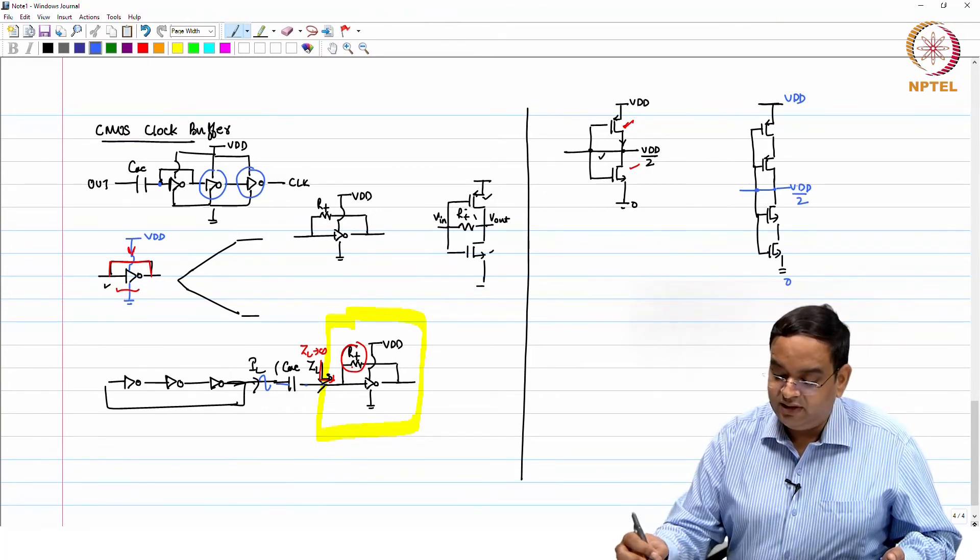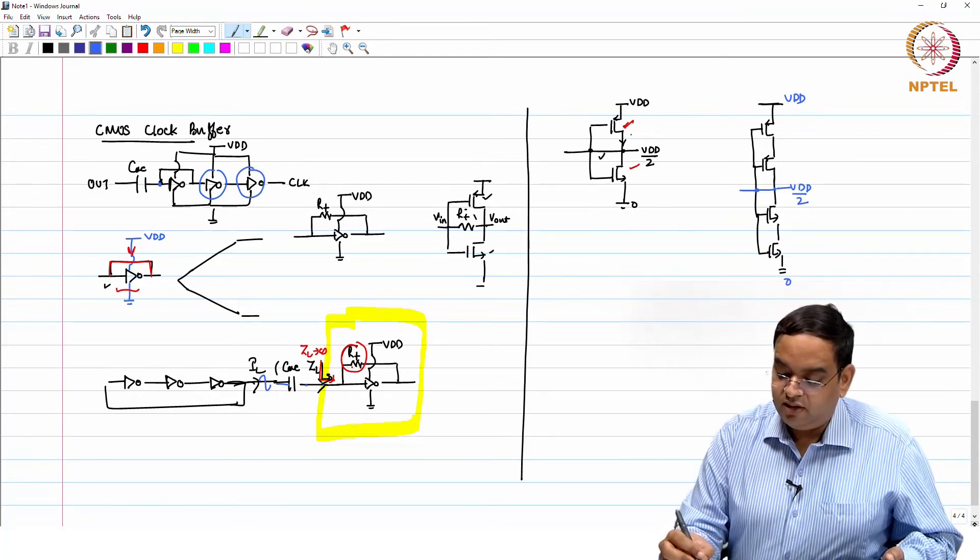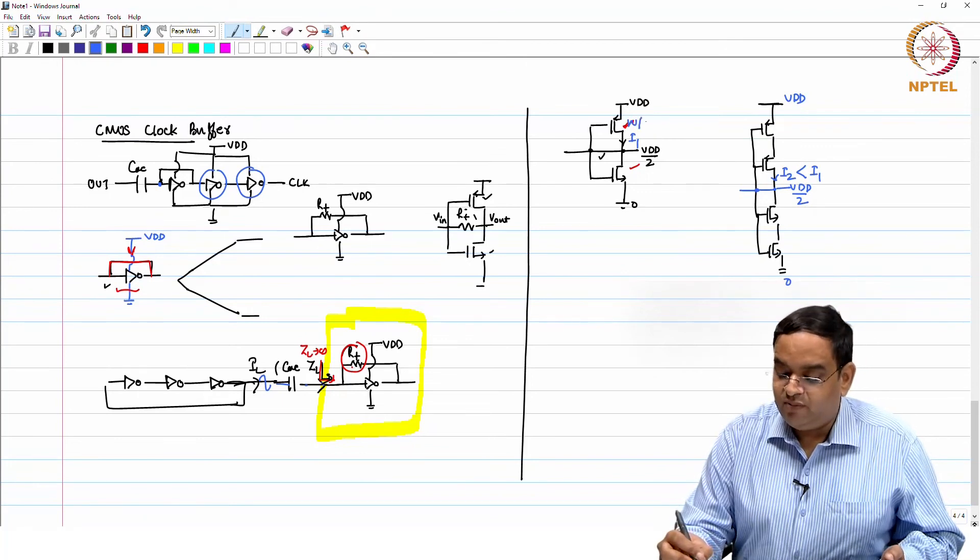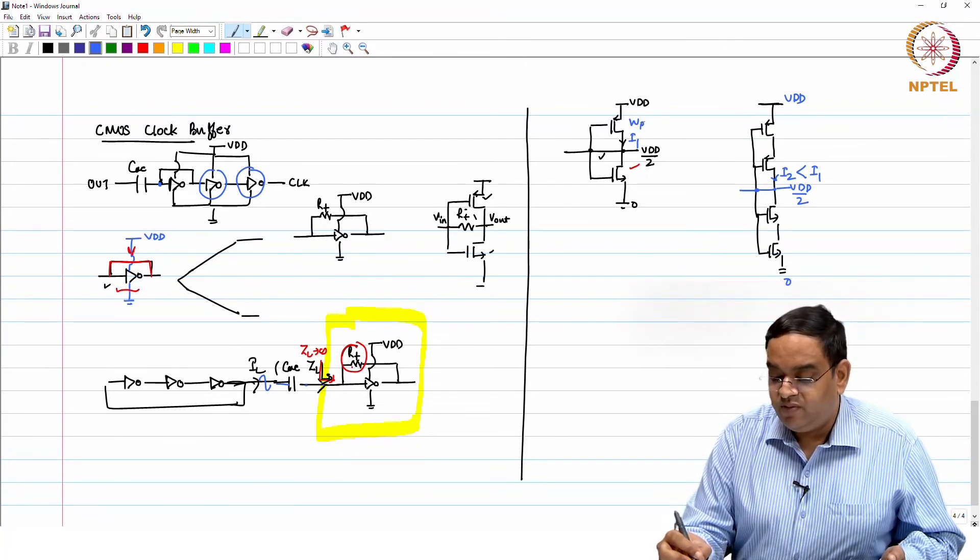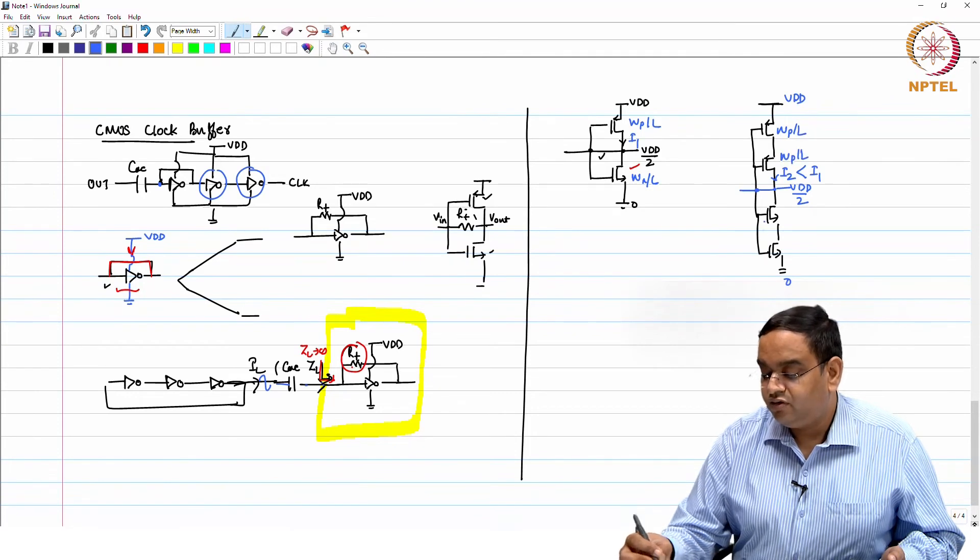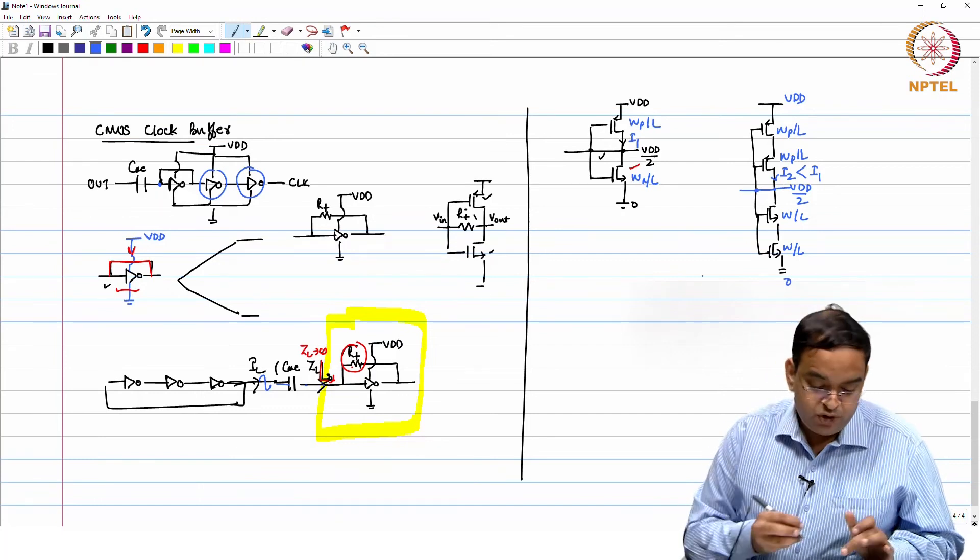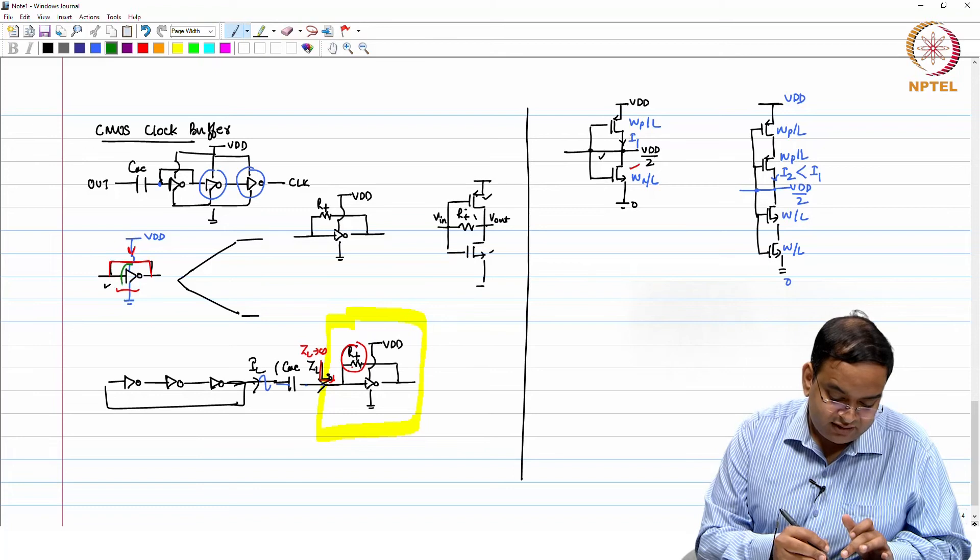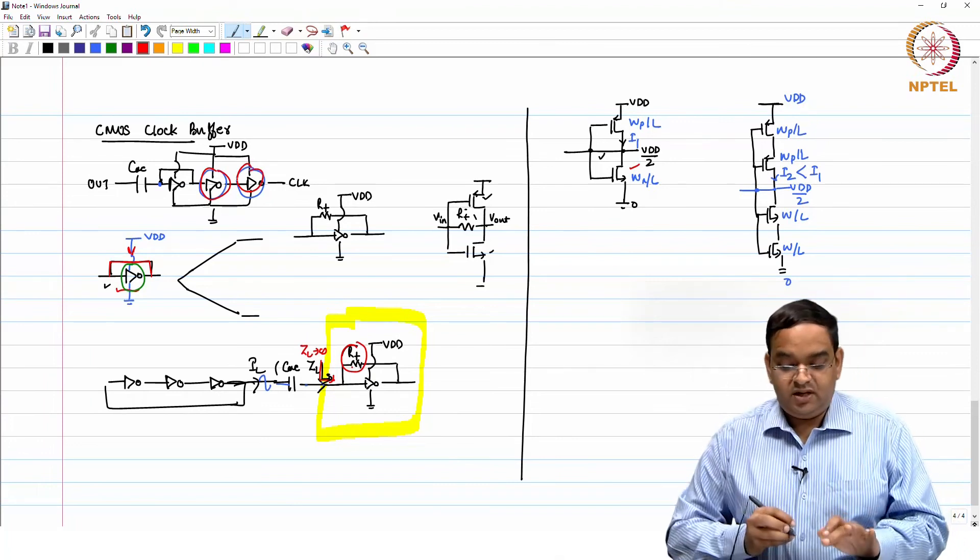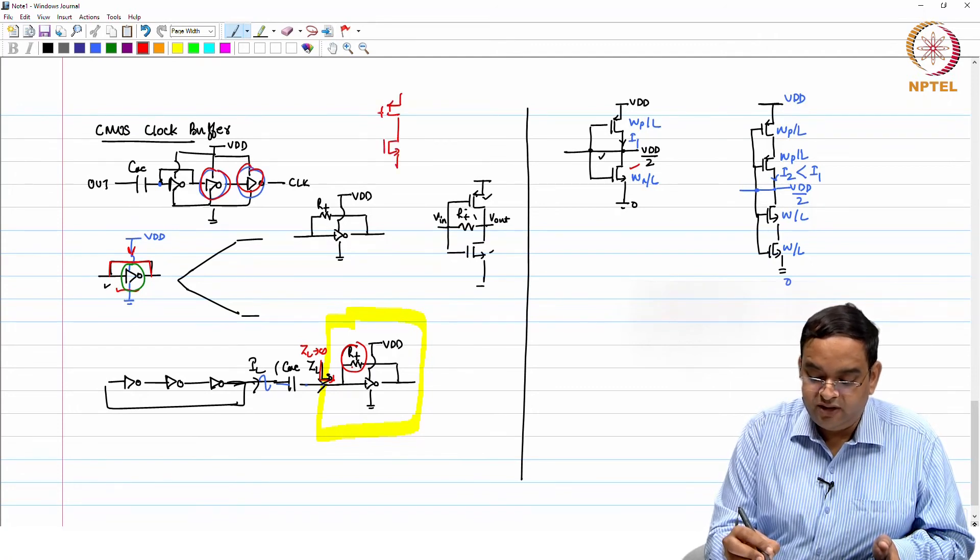The current consumption in this circuit, if I call this as current I1 the current which is flowing here is I1 and the current which is flowing here is I2, your I2 is surely less than I1. I am using the same MOSFETs let us say WP by L and WN by L. This is WP by L size is the same. If I do this then I2 current is going to be lesser. You can reduce the current consumption in the self biased inverter. But all other inverters which you are seeing here all these inverters are going to be same as simple single inverter, we are not going to do anything to that.